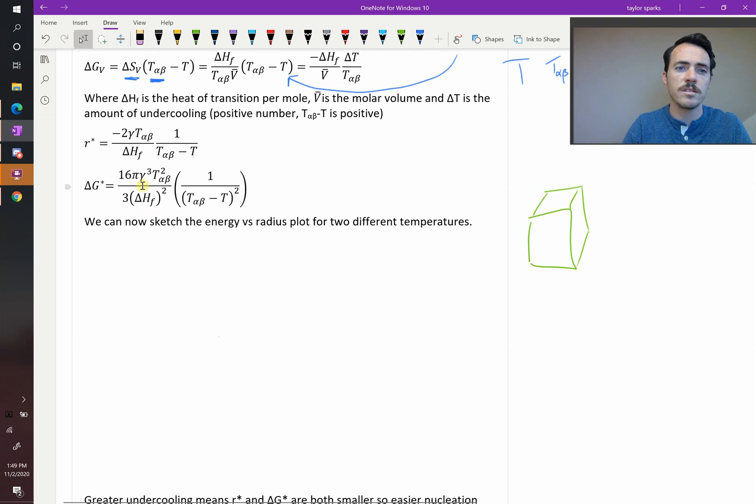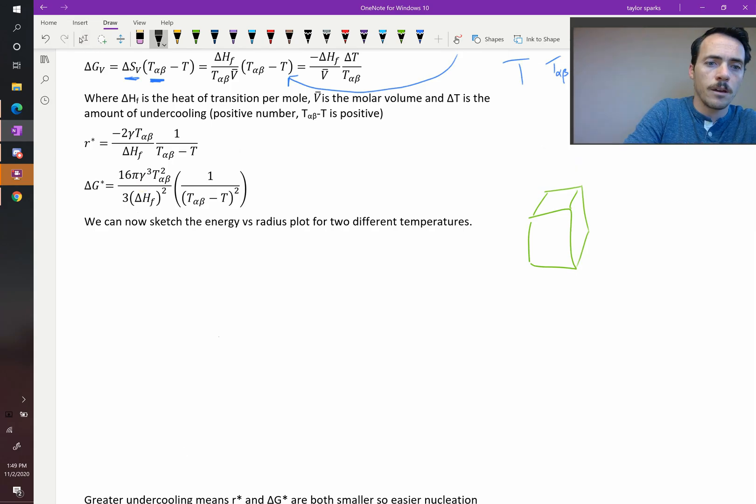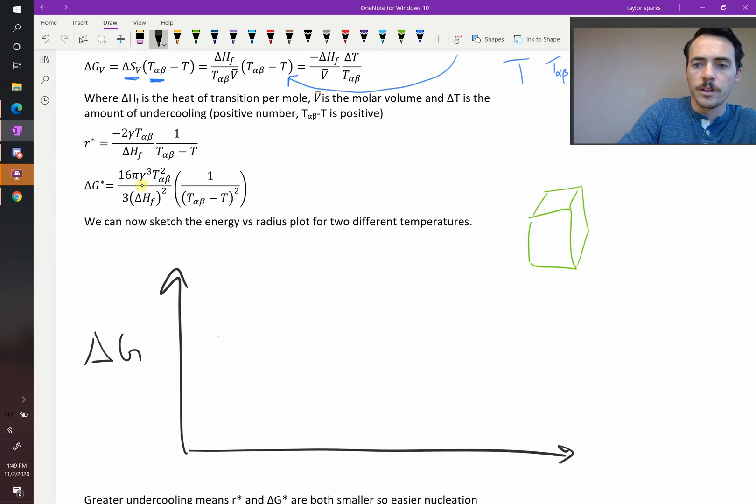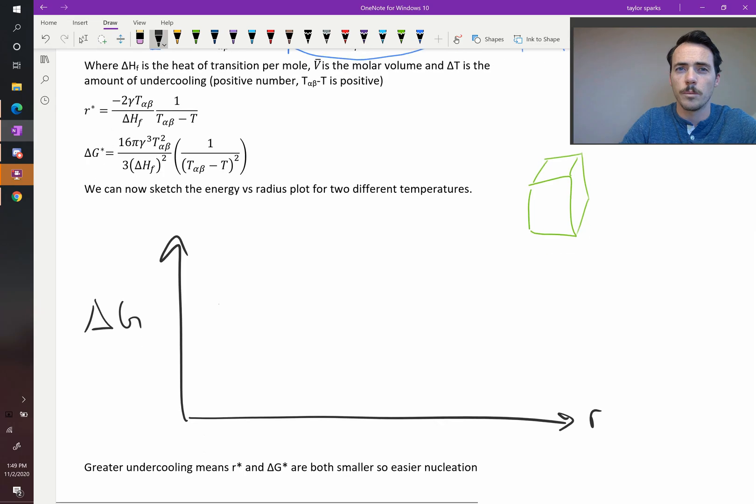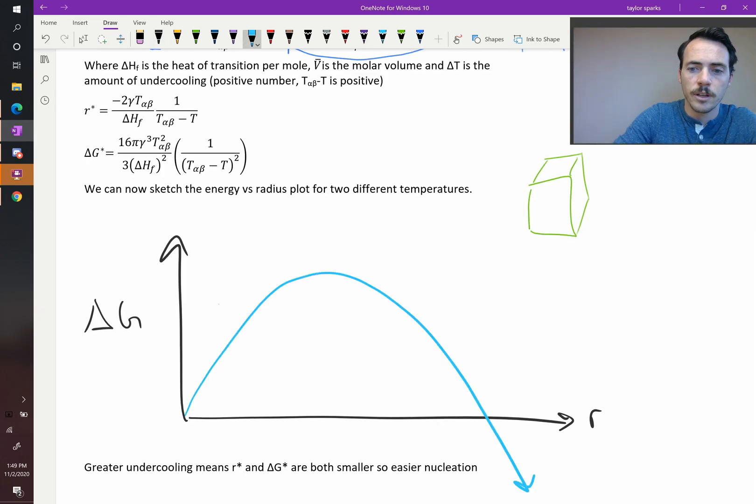Now that we have these expressions, this allows us to sketch how energy versus radius will look different as you undercool a material way below its temperature we expect this to happen. Here we have our delta G, as before, plotted against the size of this nucleus that's forming. Here was our previous drawing. It looked something like this.